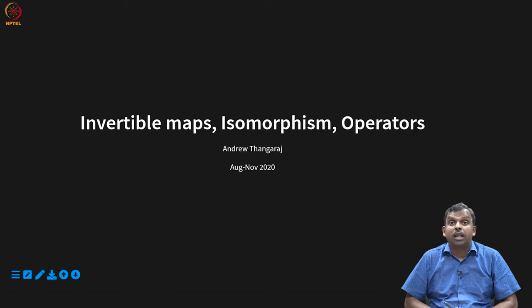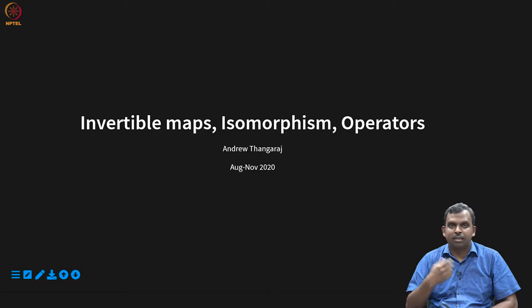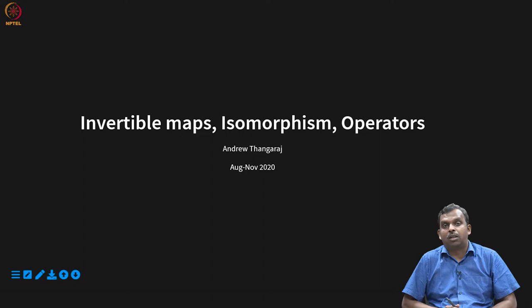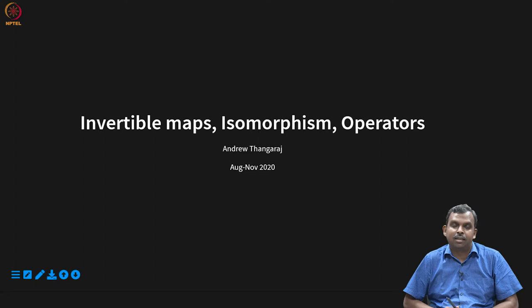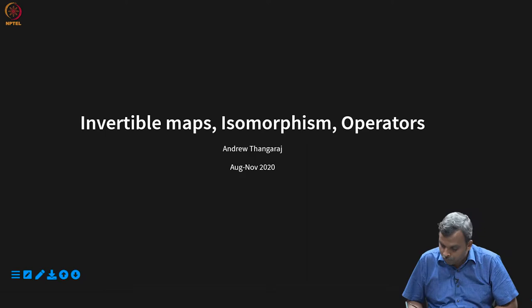Now we will make a bit more progress in that direction. In particular, we will consider invertible maps. What are these invertible linear maps? These are special maps. And once a map becomes invertible, a lot of interesting things can be said about the spaces which have invertible maps between them. An invertible map is also called an isomorphism. And there are special types of linear maps called operators. All these we will define in this class. It is mostly a definition-oriented lecture, but there will be some interesting properties and important ideas as well.